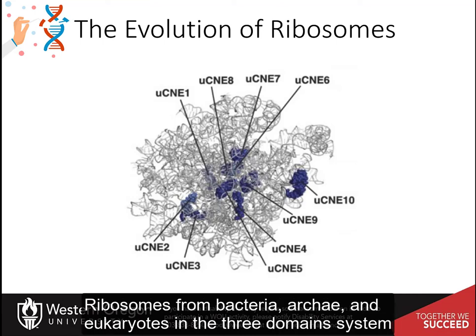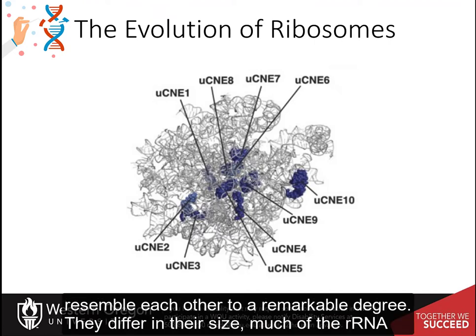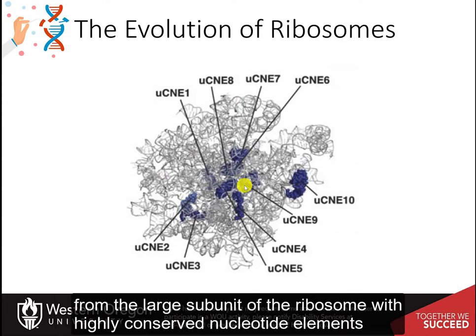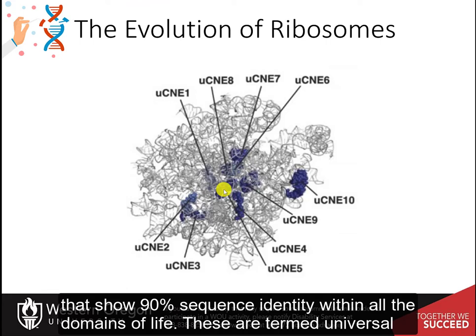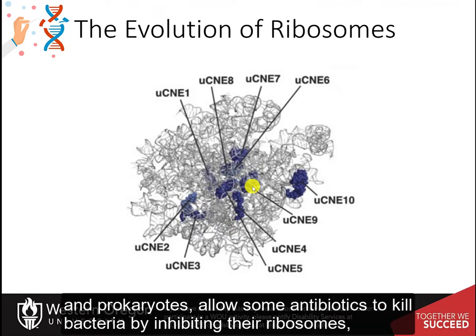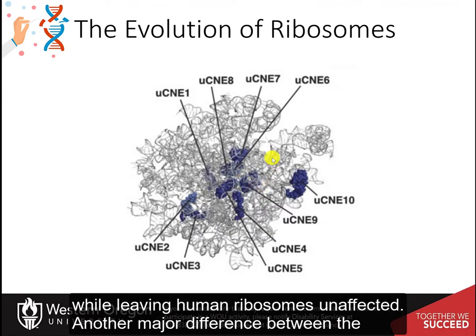Ribosomes from bacteria, archaea, and eukaryotes in the three-domain system resemble each other to a remarkable degree. They differ in their size, much of the rRNA sequence, and the ratio of proteins to RNA. Figure 11.16 shows the eukaryotic rRNA from the large subunit of the ribosome with highly conserved nucleotide elements that show 90% sequence identity within all the domains of life. These are termed universal conserved nucleotide elements, or CNEs. The differences in sequence between eukaryotes and prokaryotes allow some antibiotics to kill bacteria by inhibiting their ribosomes while leaving human ribosomes unaffected.